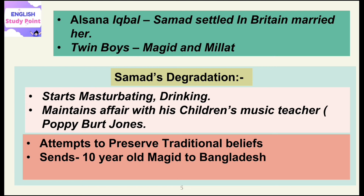We see a fall in the character of Samad, because when he merges his identity completely with English society, he is influenced by the English lifestyle. Samad, being a Muslim, is not able to remain completely devoted to Islamic values in English life — for example, he gets involved in drinking activities and maintains an affair with his children's music teacher whose name is Poppy Burt-Jones. His Muslim values are corrupted. In an attempt to preserve traditional values, he tries to send his own ten-year-old son to Bangladesh, hoping he will grow up properly under the teachings of Islam.